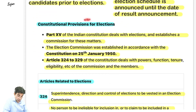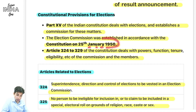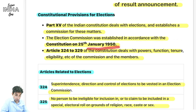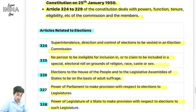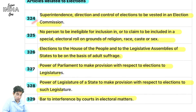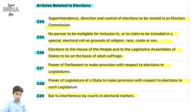MCC operational ho jaata hai jis din election ka schedule announce hota hai aur jab tak result nahi aayega tab tak MCC laga rahega. Election ka schedule announce kaun karta hai? Constitution ki baat karein toh Part 15 mein elections se related matters diye hue hain. Part 15 mein Election Commission ka establishment ki baat hai - 25 January 1950 mein yeh bana tha, isi din hum National Voters Day celebrate karte hain. Article 324 se 329 mein powers, functions, tenure, eligibility diya hua hai. 324 hai superintendence, direction, control of election - vested in the Election Commission.